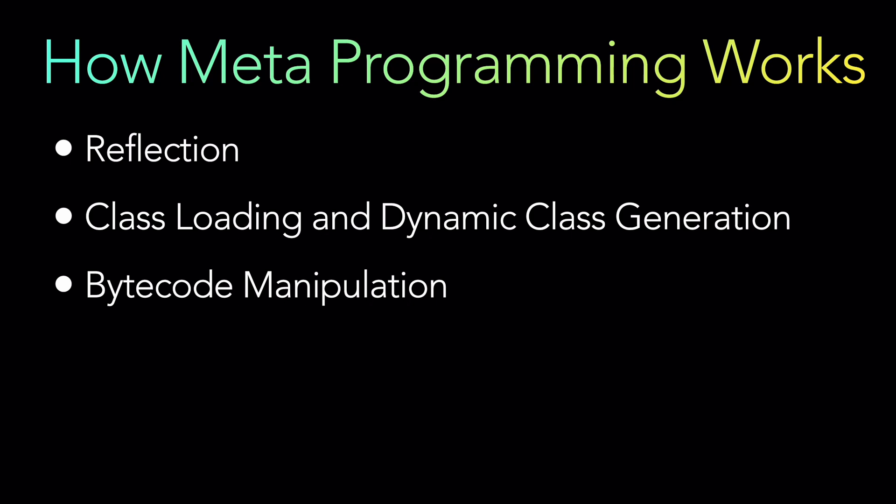Next is bytecode manipulation. Metaprogramming may involve manipulating bytecode, which is a very low-level representation of code understood by the runtime environment. Bytecode manipulation libraries or frameworks allow modifying or generating bytecode dynamically. This enables modification of existing classes, addition of methods, and creation of new classes programmatically. Internally, libraries given to you in Java or other languages work using bytecode manipulation, class loading, and dynamic class generation.